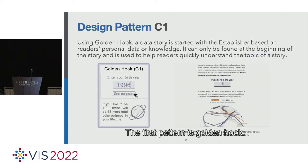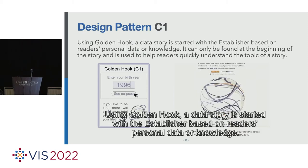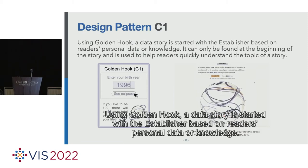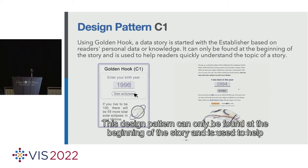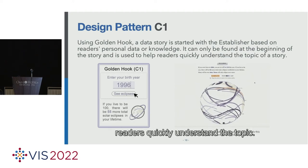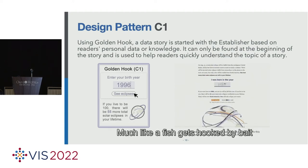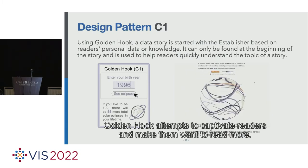The first pattern is golden hook. Using golden hook, a data story is started with a step miniature based on readers' personal data or knowledge. This design pattern can only be found at the beginning of the story and is used to help readers quickly understand the topic. Much like a fish gets hooked by bait, golden hook attempts to captivate readers and makes them want to read more.